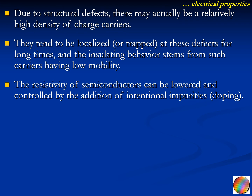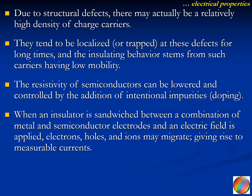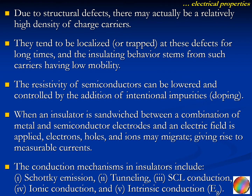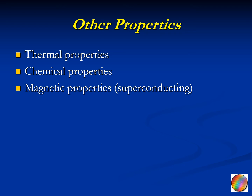The resistivity of semiconductors can be lowered and controlled by the addition of intentional impurities by a process called doping. When an insulator is sandwiched between metal and semiconductor electrodes and an electric field is applied, electrons, holes, and ions may migrate, giving rise to measurable currents. The conduction mechanisms in insulators include Schottky emission, tunneling, surface charge layer conduction, ionic conduction, and intrinsic conductivity. There are other important properties not discussed here, specific to certain applications: thermal properties, chemical properties and composition, and magnetic properties, which are very important for example in recording materials and superconducting materials.